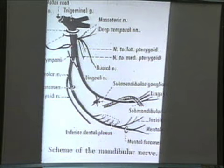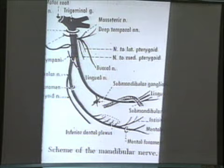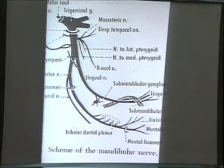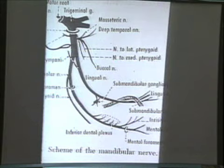The auriculotemporal nerve is an important branch providing sensory supply to the anterior region of the ear. Associated with the lingual nerve is a branch of the seventh cranial nerve — the chorda tympani — carrying taste as well as parasympathetic fibers to the perioral region.